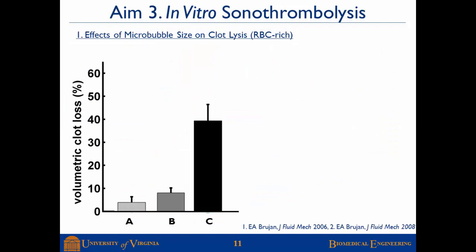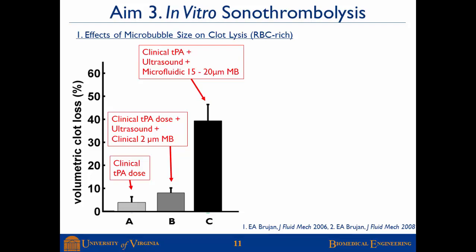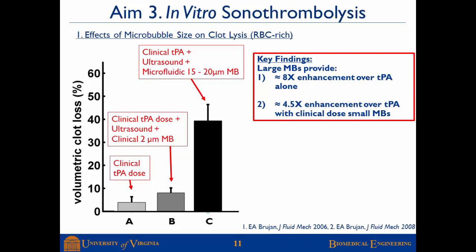Here are results from the in vitro assay discussing the effect of microbubble size on clot lysis. Bar A shows clot loss with standard TPA infusion alone at 30 minutes. Bar B shows results with clinical TPA dose, clinically relevant ultrasound parameters, and microbubbles similar to DEFINITY — about a two-fold increase over TPA alone. Bar C shows our large microfluidic microbubbles with a diameter between 15 and 20 micrometers. The key finding is that these larger microbubbles provide about an eight-fold enhancement in clot loss over TPA alone, and about a four-and-a-half-fold enhancement over standard sonothrombolysis.